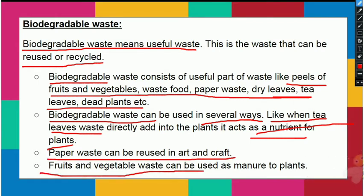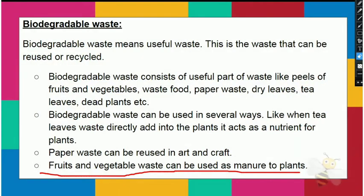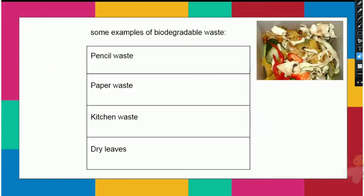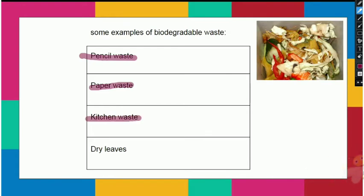We can use vegetable and fruit waste as materials. Biodegradable waste such as kitchen waste can be converted into fertilizers and manure. Dry leaves are also useful biodegradable waste.